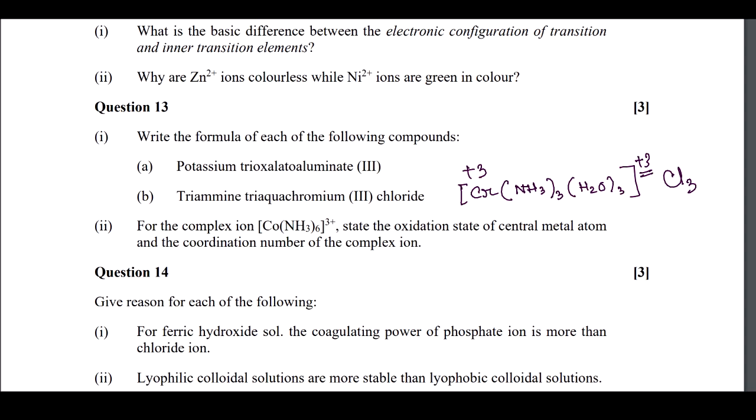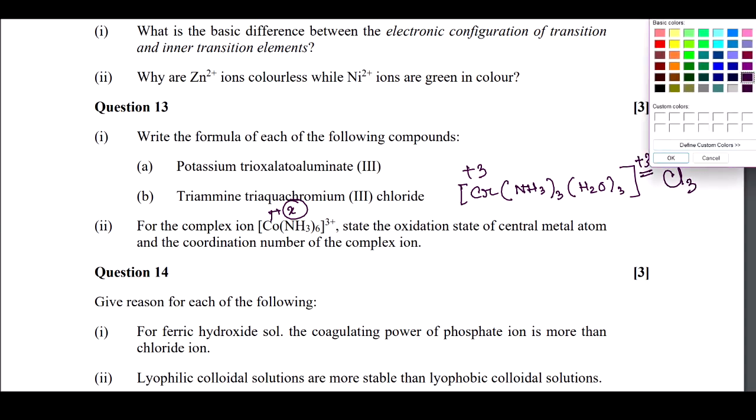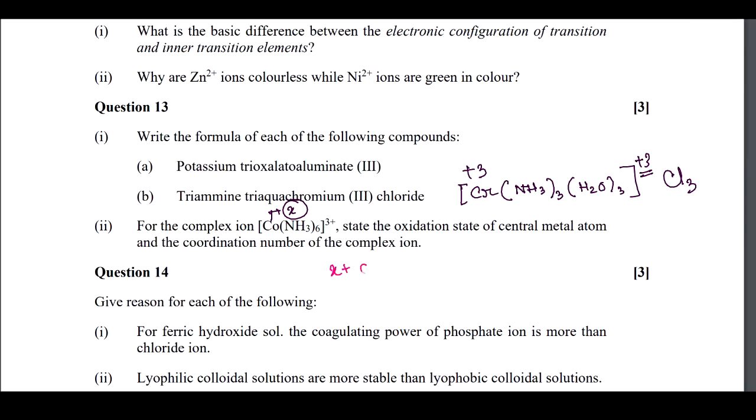For the complex ion, cobalt hexammine complex coordination sphere: state the oxidation state. Here oxidation state, let us consider oxidation state is X. If the oxidation state is X, we can take X plus neutral ligand 0 equals 3 plus. So the oxidation number of cobalt will be plus 3. What will be the coordination number? Coordination number means metal is attached with how many ligands. If you haven't seen my coordination chemistry video, you can see this there. The things are explained. Part 2 video will come very soon. Here the coordination number will be 6.